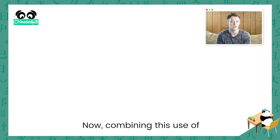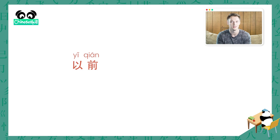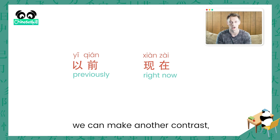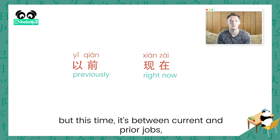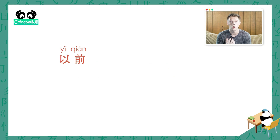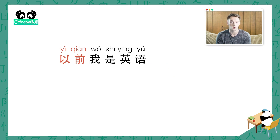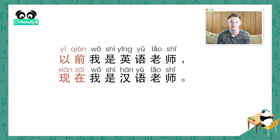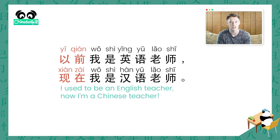Now, combining this use of 以前 to mean previously with 现在 for right now, we can make another contrast, but this time it's between current and prior jobs. For example, I could say 以前我是英语老师。现在我是汉语老师。 I used to be an English teacher, now I'm a Chinese teacher.